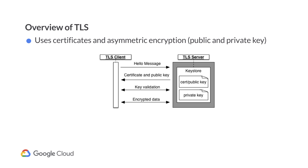As you might know, authentication is an integral part for preventing message forgery between two actors. Certificates are the documents used for authenticating and providing the identity of the actors involved in the communication. Asymmetric encryption, which is also referred to as public and private key encryption, basically uses a pair of public and private keys for encryption and decryption.